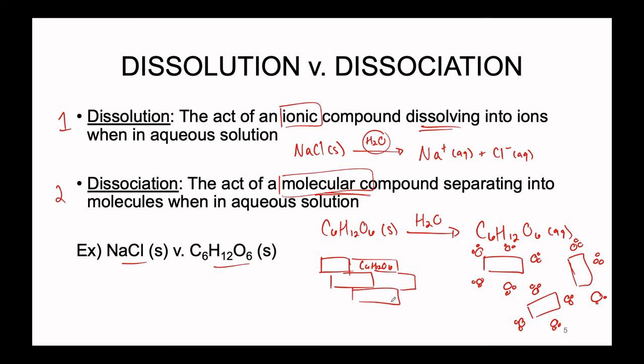So dissolution versus dissociation describes how ionic versus covalent compounds interact with water. If you're working with an ionic species it will more than likely follow dissolution and break into ions in solution. If you're working with a molecular compound it will follow dissociation — individual molecules separate from each other, but nothing breaks down further than that.